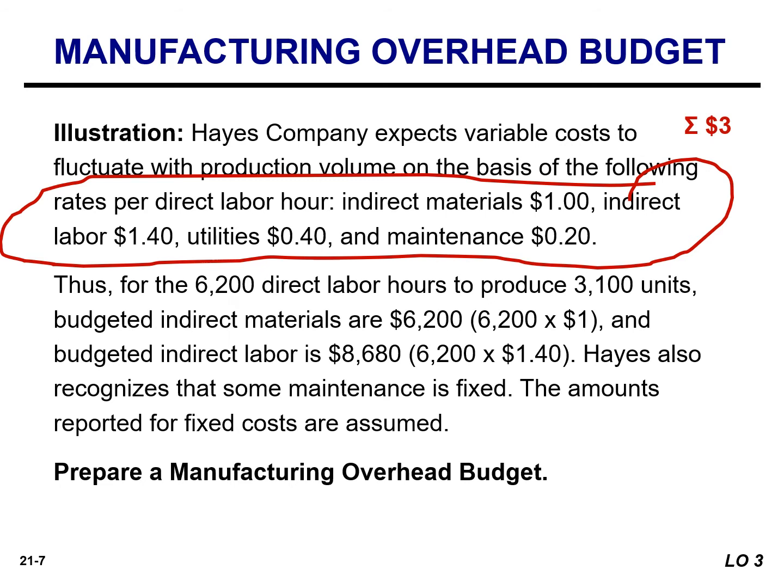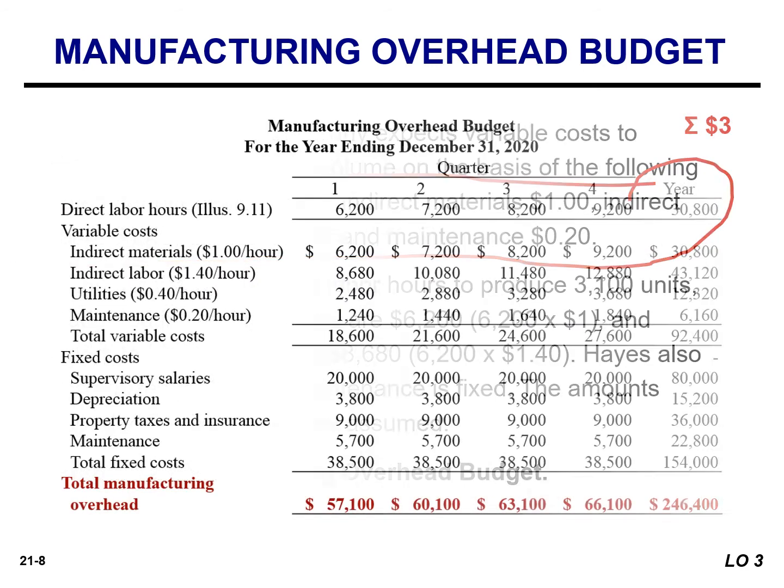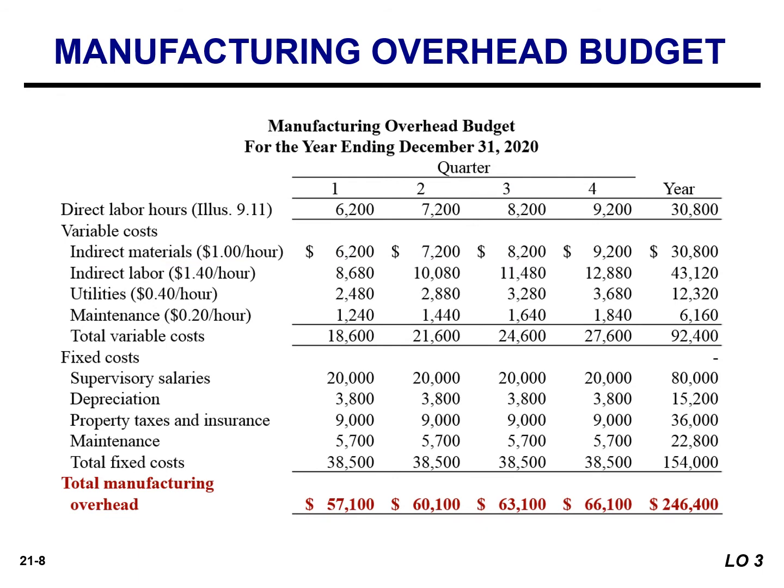Hayes also recognizes that some maintenance is fixed. The amounts reported for the fixed costs are assumed. The variable costs are obtained by taking the variable cost per unit and multiplying by the direct labor hours.